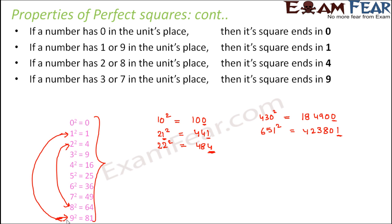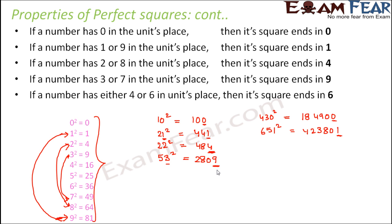If a number has 3 or 7 in its units place, then its square ends in 9. For example, 53 squared is 2,809 — since the number ends in 3, its square ends in 9.